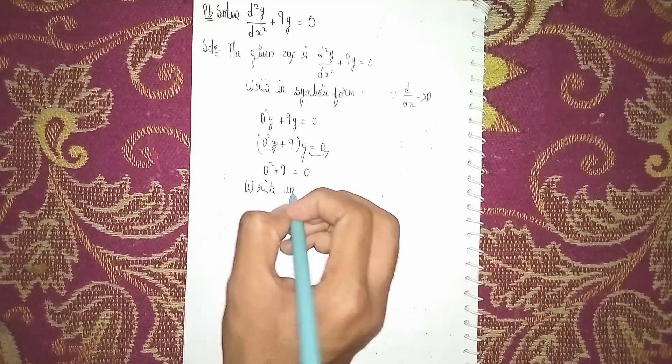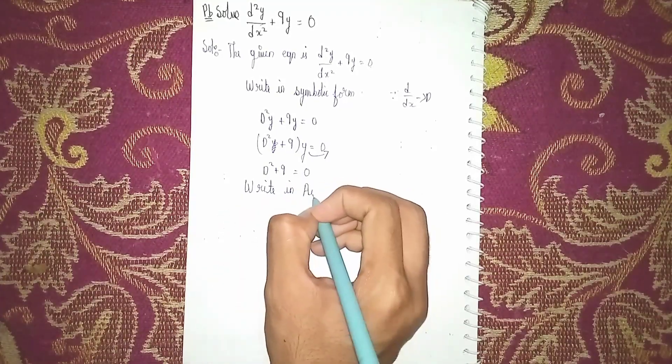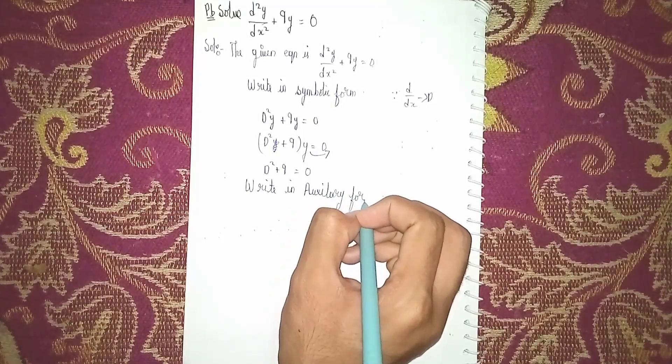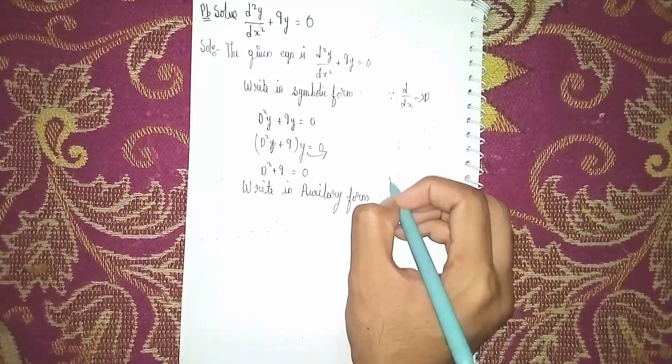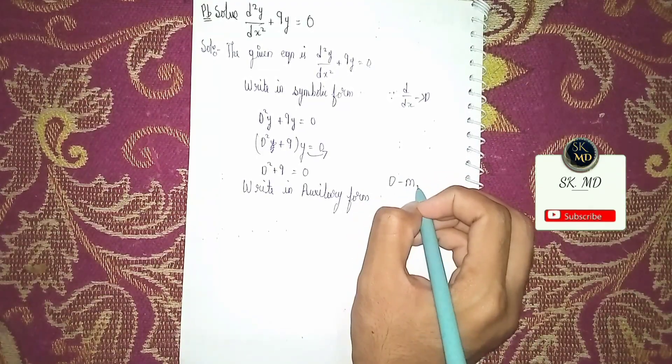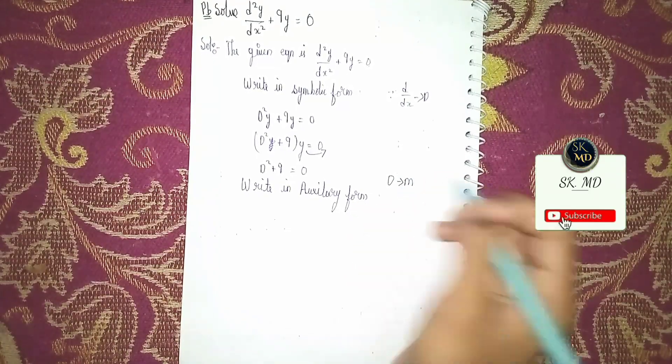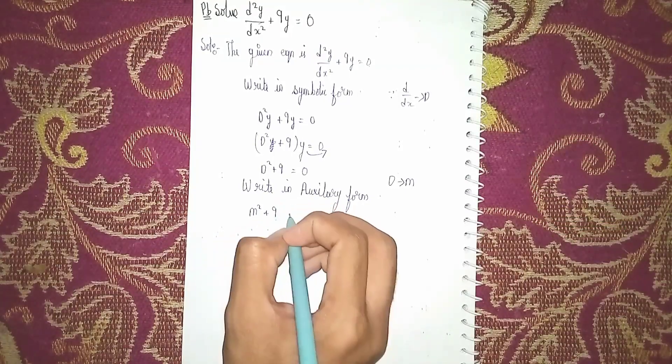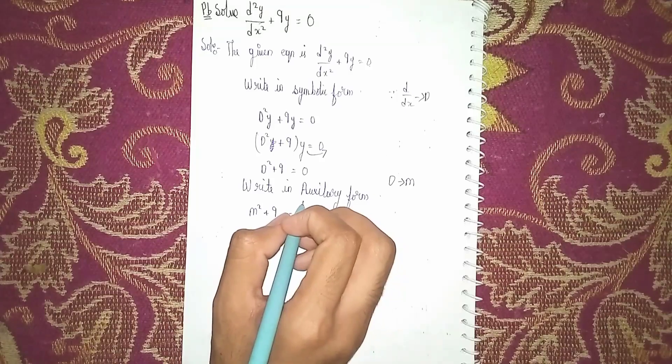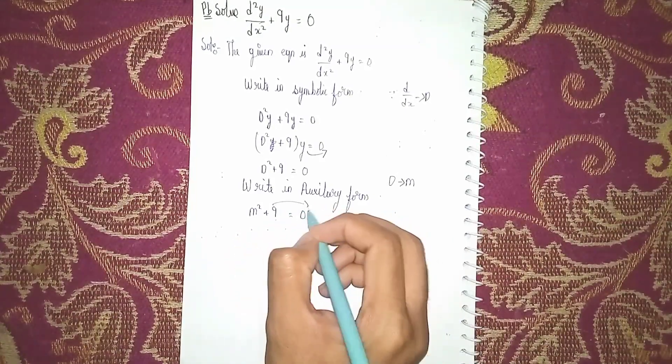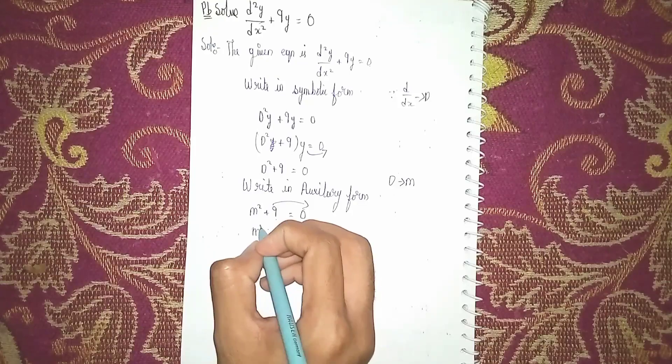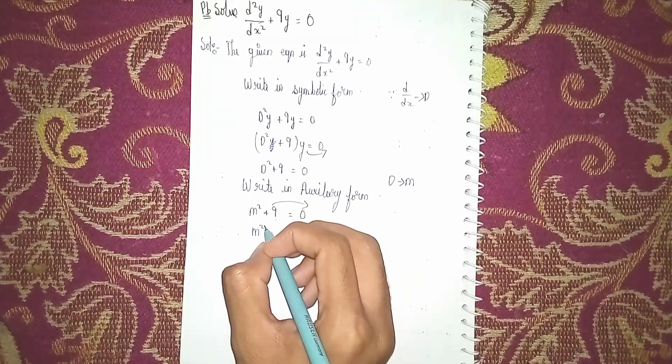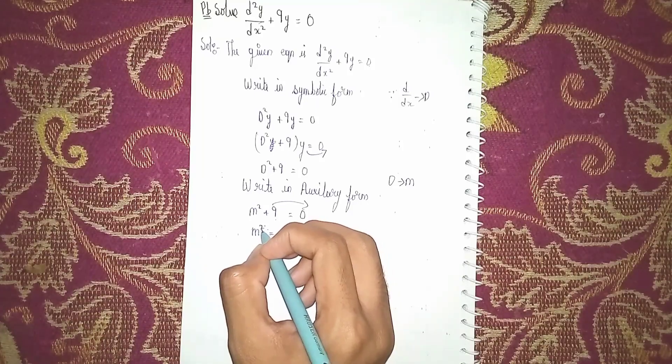Auxiliary form means instead of D I put m. Why am I writing m? To find the roots. It becomes m² + 9 = 0. Sending this +9 to this side will become minus. m² = -9. Now sending this square to this side becomes under root, so m = √(-9).